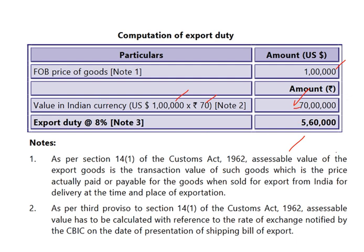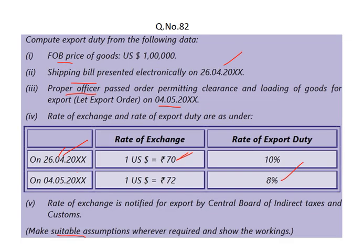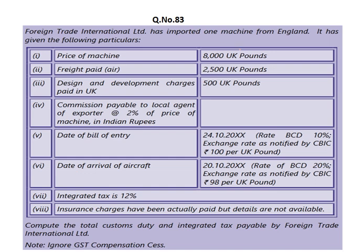Note 1: As per Section 14 of the Customs Act 1962, the assessable value for export duty is the transaction value of such goods, which is the price actually paid or payable for the goods when the goods are exported from India for delivery at the time and place of exportation. So this was the meaning - that is why I have taken that rate. You need to read this second note to understand why we have taken the assumptions and rates. This was all about question number 82.